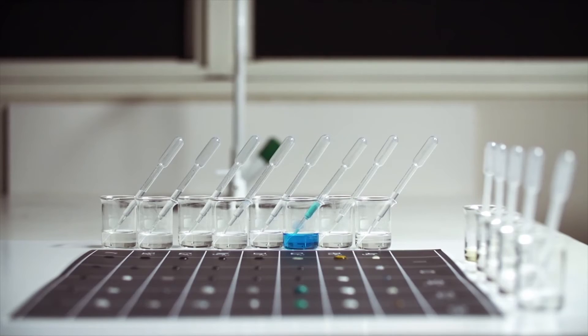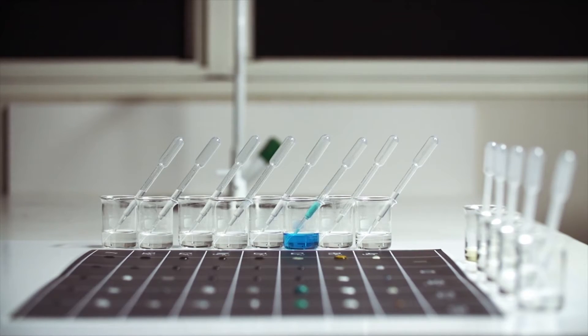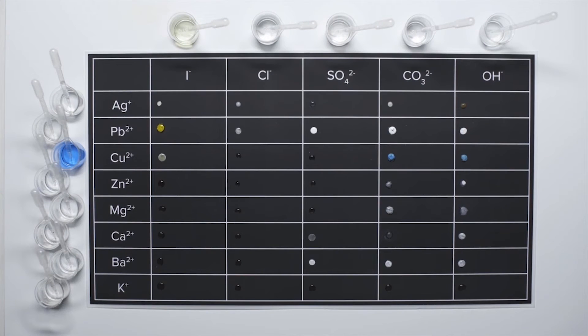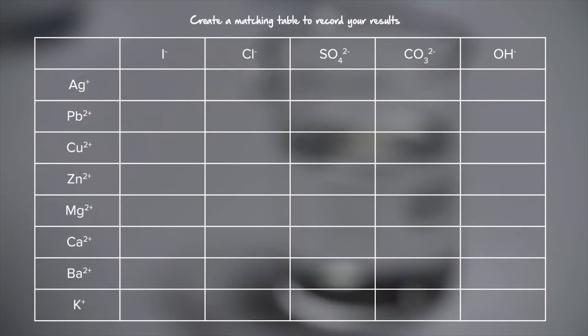For these reactions, we're going to be using a type of semi-micro technique where only small quantities of solutions are used. A spot plate or an acetate sheet is suitable for testing small quantities. We will be using a grid. It's a good idea to label the cations and anions on the grid so we can easily identify the precipitates formed. An identical results table makes recording observations easier as well.